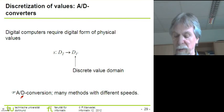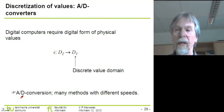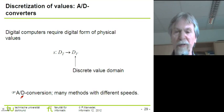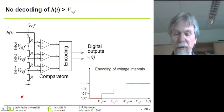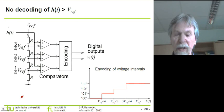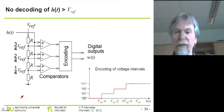There are many different converters that we can use, and each type of converter comes with different characteristics. As examples, I will be presenting two different types. The first type is a converter which is very fast but has only a very limited resolution.